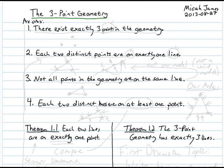The first axiom says there exist exactly three points in the geometry. Axiom 2 says each two distinct points are on exactly one line. Axiom 3 says not all points in the geometry are on the same line. And axiom 4 says each two distinct lines are on at least one point.